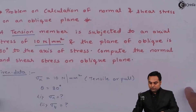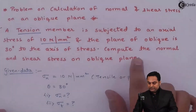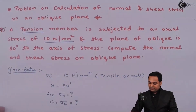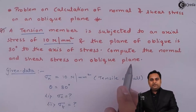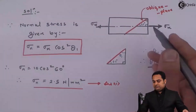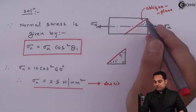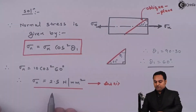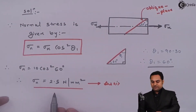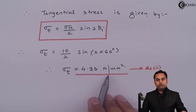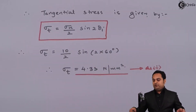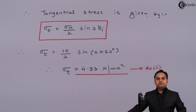Looking back at the problem, the question was to calculate the normal and shear stress on the oblique plane, which is the inclined plane. We have found out the normal stress as 2.5 N/mm² and the shear stress as 4.33 N/mm² on the oblique plane, and with this we complete the problem.